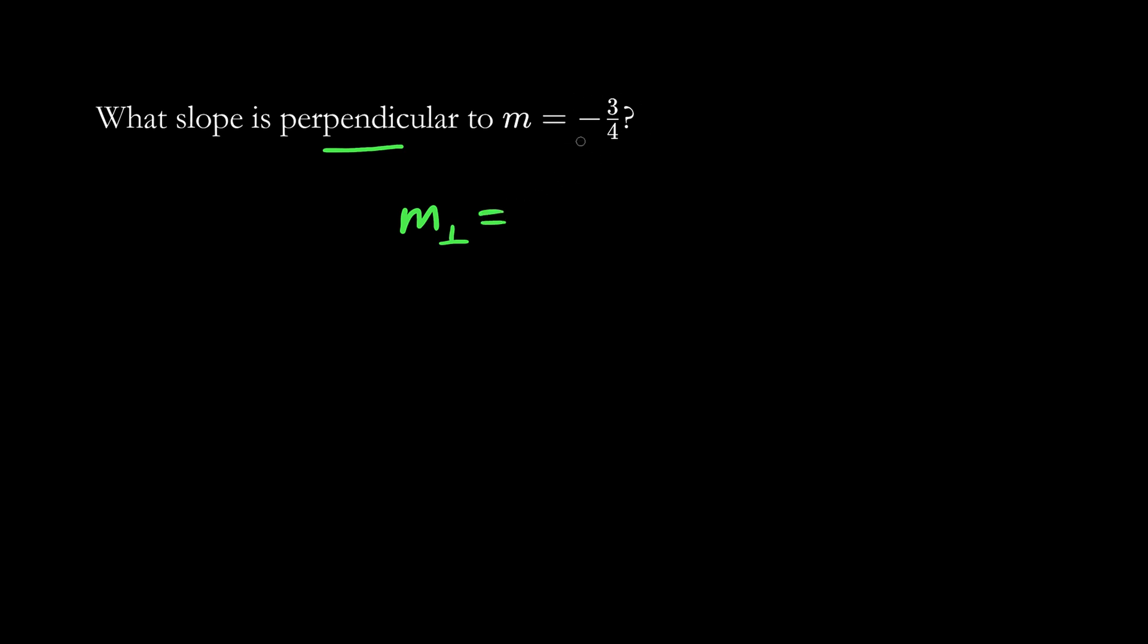we're going to take a negative reciprocal, which means that we're going to flip the 3/4 to become 4 over 3, and we're going to switch the sign. Negative becomes positive.